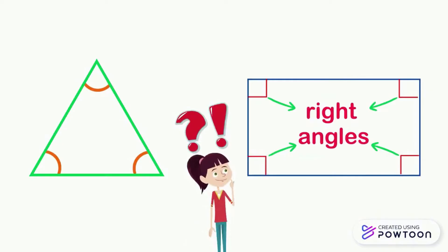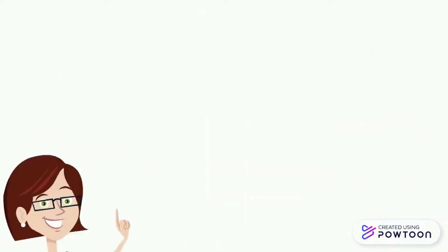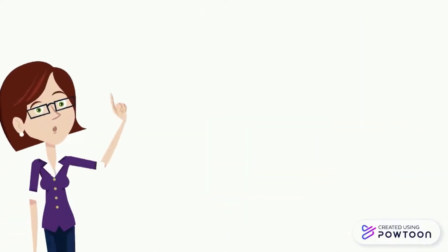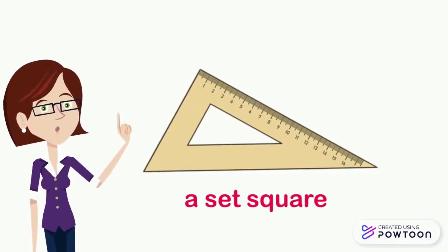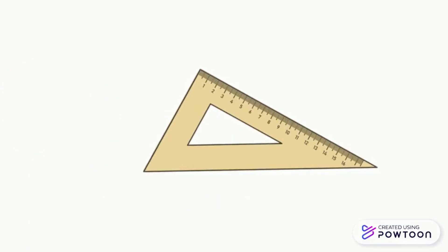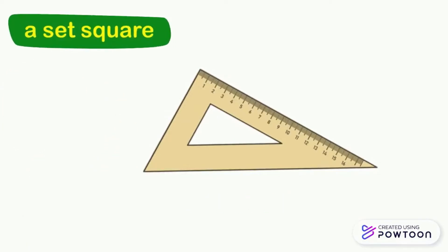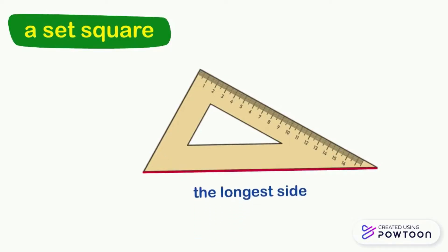But what is a right angle? To recognize the right angle, we need a geometric tool called a set square. In a set square, there are three angles. And to find the right angle, we have to indicate the longest side of the set square.